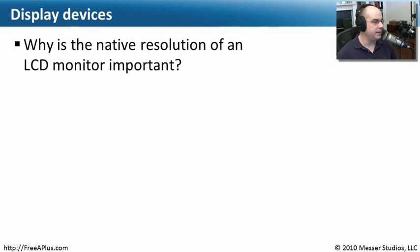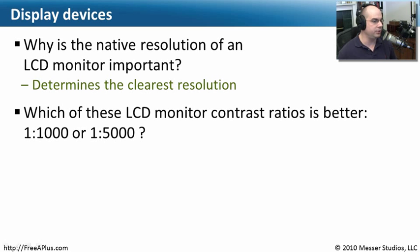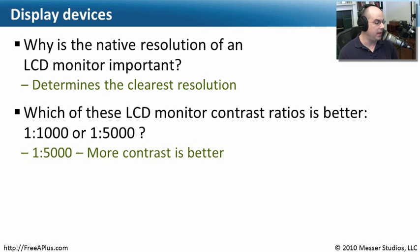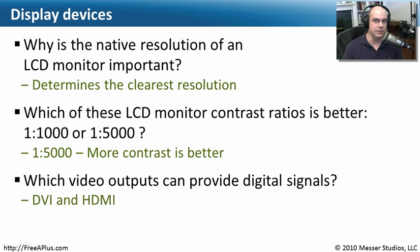To review: the native resolution of an LCD monitor is important because it determines the clearest, crispest image your screen can display — it should match what your computer outputs. For contrast ratios, 1:5,000 is better than 1:1,000 because more contrast is better. For digital video output, both DVI and HDMI support digital signals, while VGA is analog only.